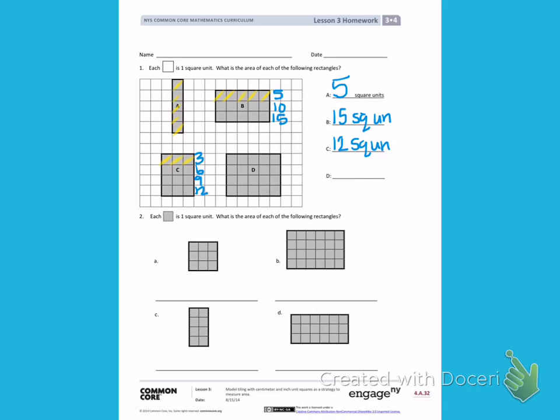Rectangle D has 1, 2, 3, 4, 5 squares going across just like rectangle B, so I'm going to count by 5's. 5, 10, 15, 20, giving me 20 square units.